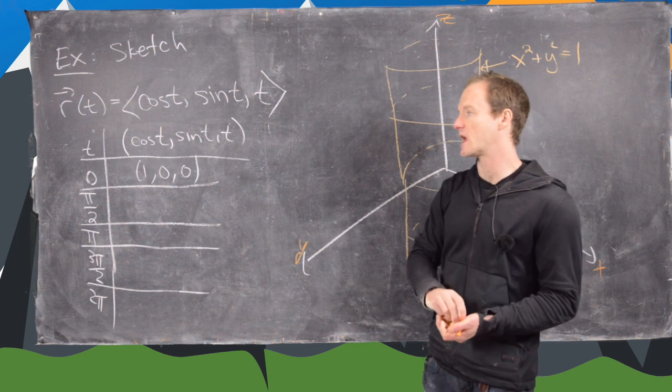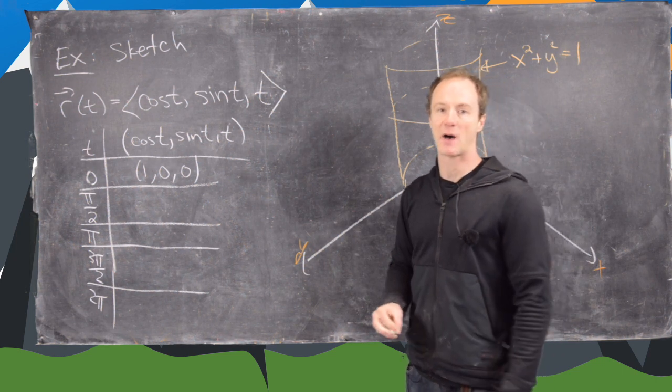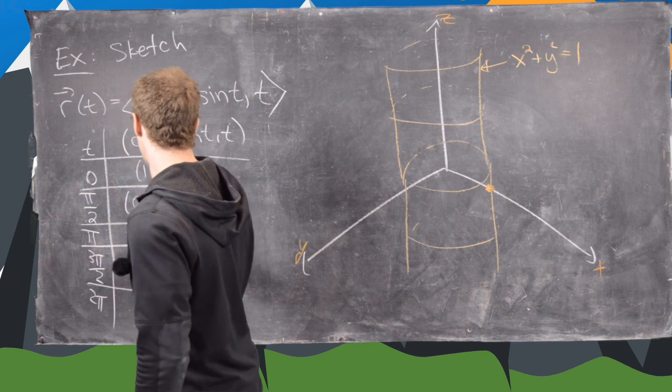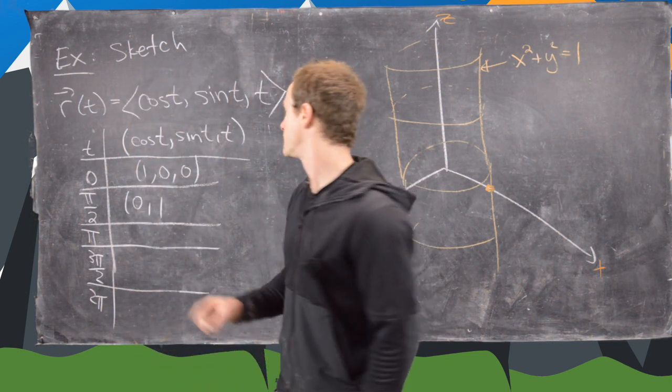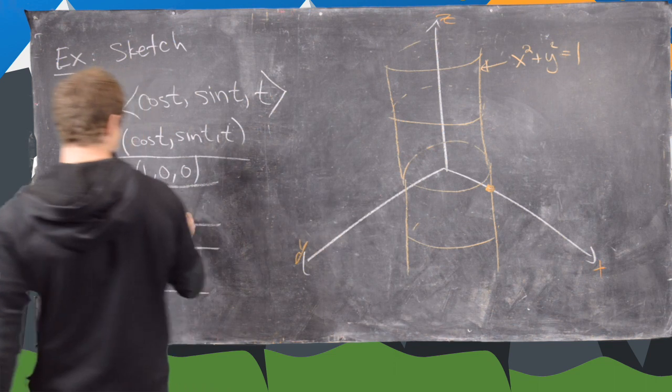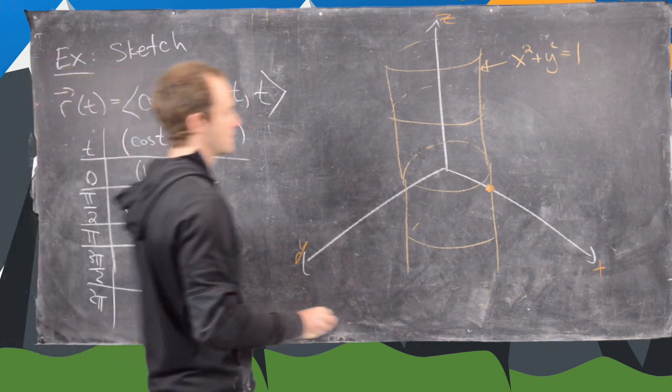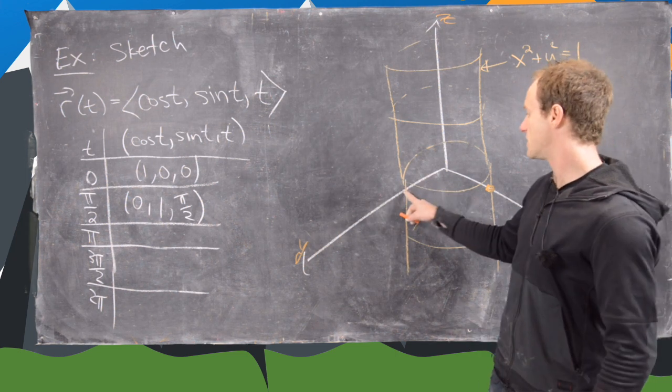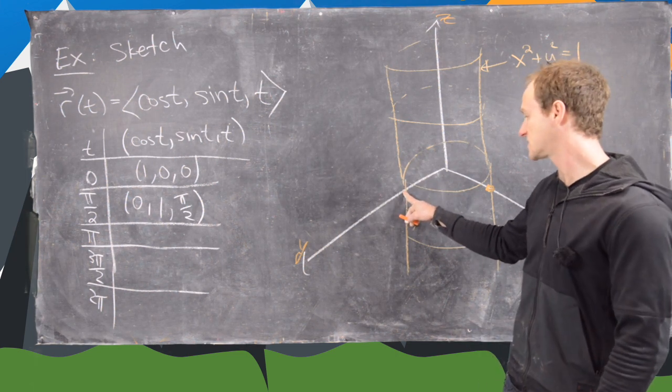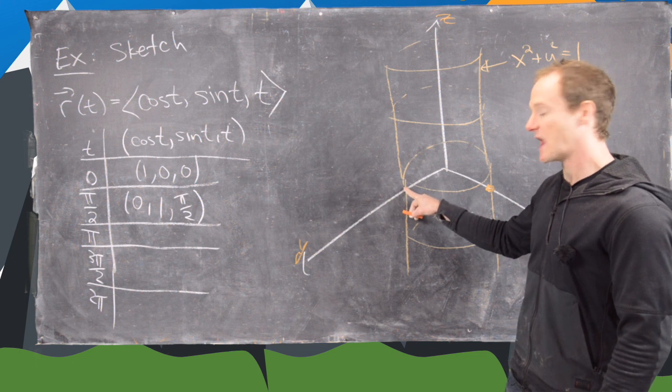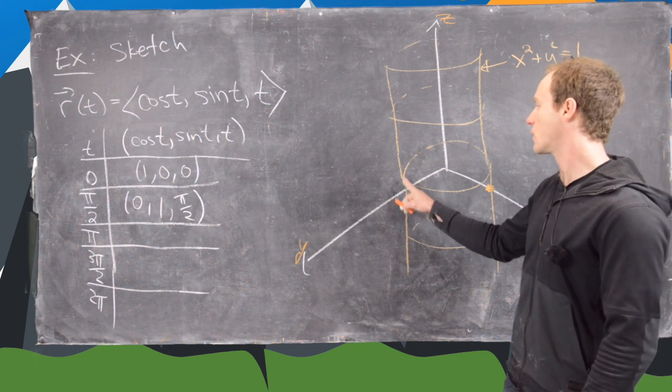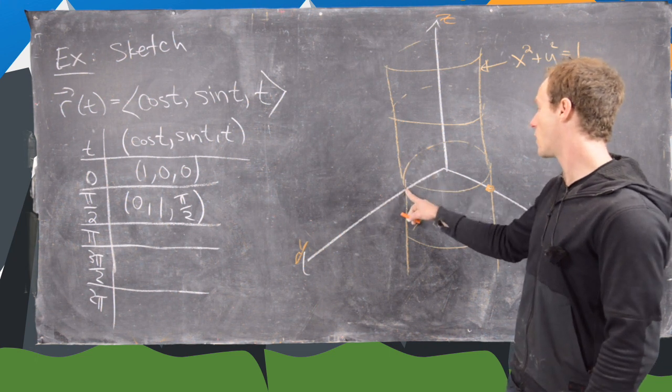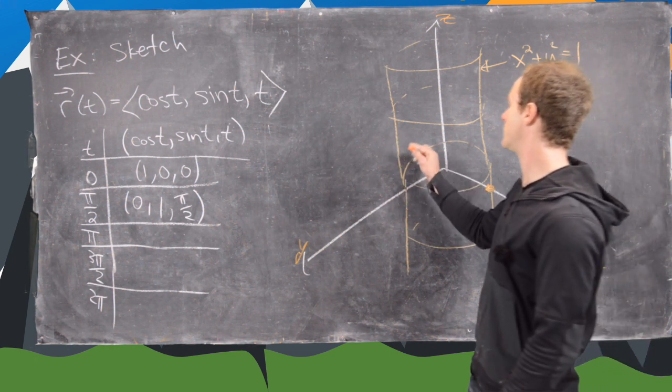So now let's plug in t equals pi over 2. So that's going to give us cosine is 0, sine is 1, and then t is equal to pi halves. So let's see where that is. So that's going to be out along the y-axis, but we're not exactly on the y-axis. We're up pi over 2 units. So let's see. If that's 1, then pi over 2 units is maybe up here.